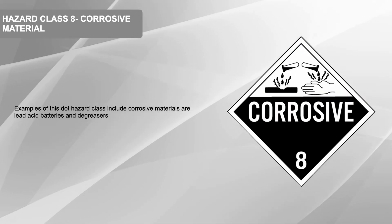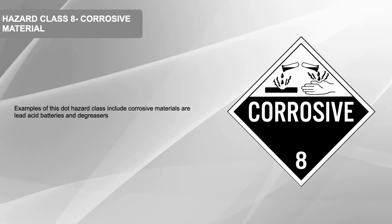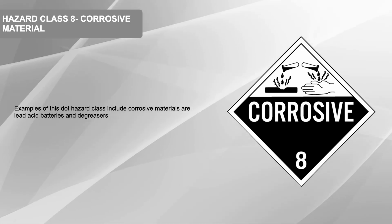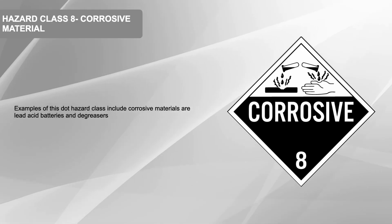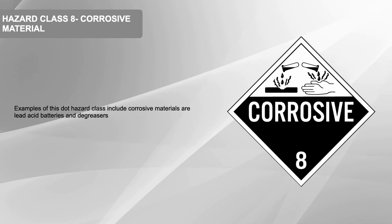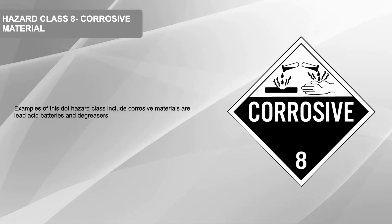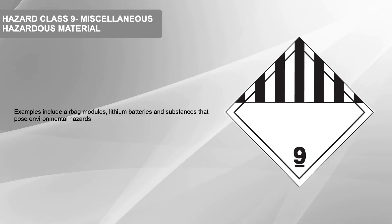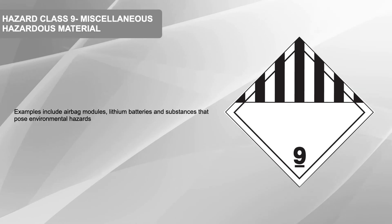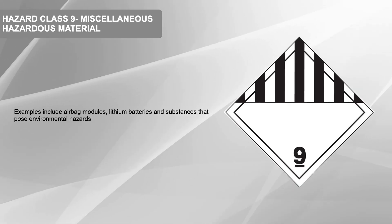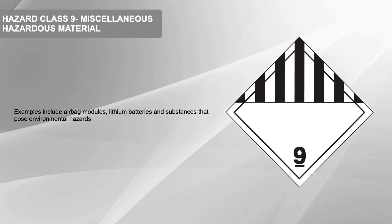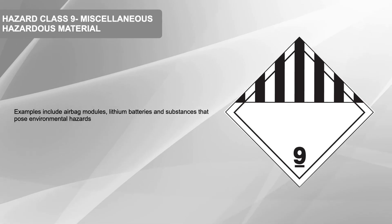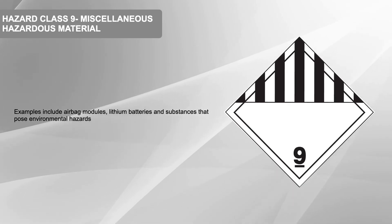Hazard Class 8: Corrosive Material. Examples of this DOT hazard class include lead-acid batteries and degreasers. Hazard Class 9: Miscellaneous Hazardous Material. Examples include airbag modules, lithium batteries, and substances that pose environmental hazards.